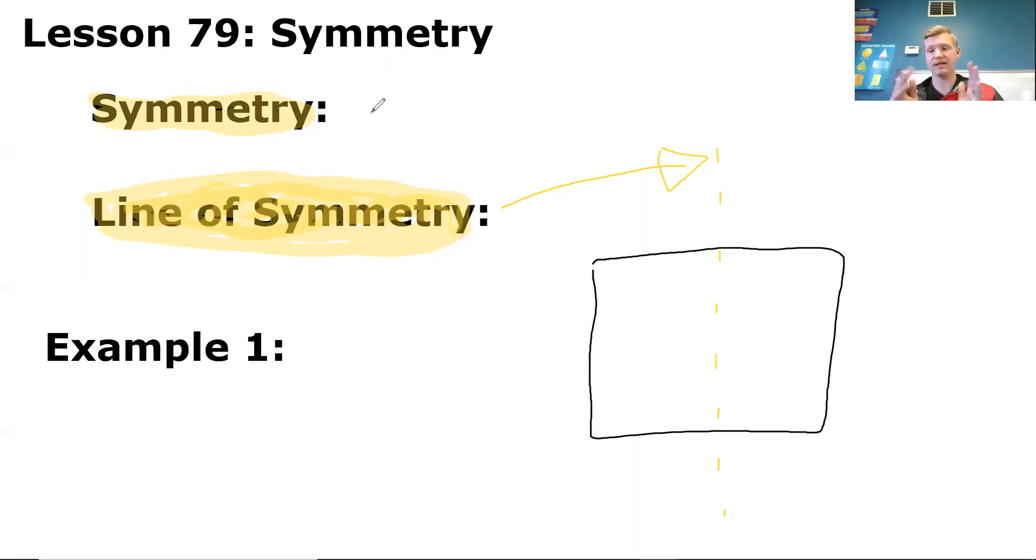So take a piece of paper for example. If you fold your piece of paper in half, is it symmetrical? Fold it perfectly in half, is it the same on both sides? Yes. So that's like what this square is. If I fold this square in half, is it symmetrical about that line of symmetry? Yes.